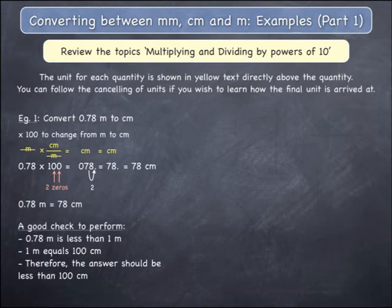A good final check to perform is to look at your starting quantity of 0.78 metres, which is less than 1 metre. 1 metre equals 100 centimetres, and therefore you expect an answer that is less than 100 centimetres.